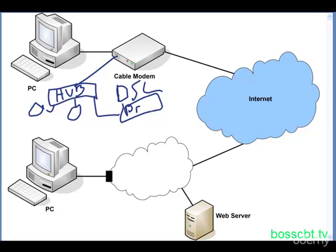Before we move on, a quick mention: if you're new to networking, you're going to see a lot of diagrams with clouds. Here I'm just circling the Internet cloud. Clouds are used in diagrams to represent a large number of nodes and devices, the details of which are not necessarily important for the conversation at hand. It's a lot easier to use a cloud to represent the Internet than to draw everything — that's nearly impossible.